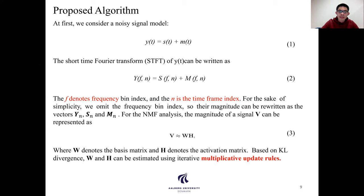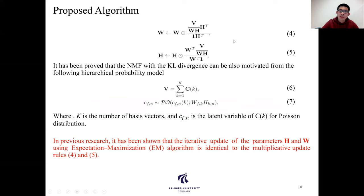W denotes the basis matrix and H denotes the activation matrix. Based on KL-divergence, W and H can be estimated using the MU algorithm, which can be written as equation 4 and equation 5. After we estimate W and H, we can reconstruct the signal V.